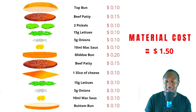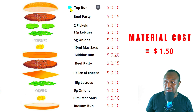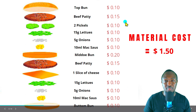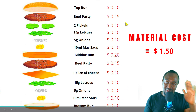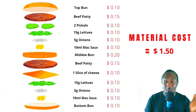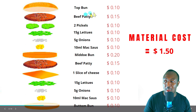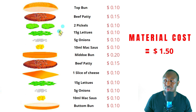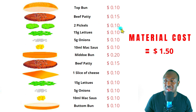Now let's look at the ingredients involved in making a Big Mac burger. Note: all the prices I have here are not exact — I just estimated them, so please do not judge me. In making a Big Mac burger, we have the top bun at 10 cents, the first beef patty at 15 cents, two pickles at 10 cents, 15 grams of lettuce at 10 cents, five grams of onions at 10 cents, and Big Mac sauce at 10 cents.